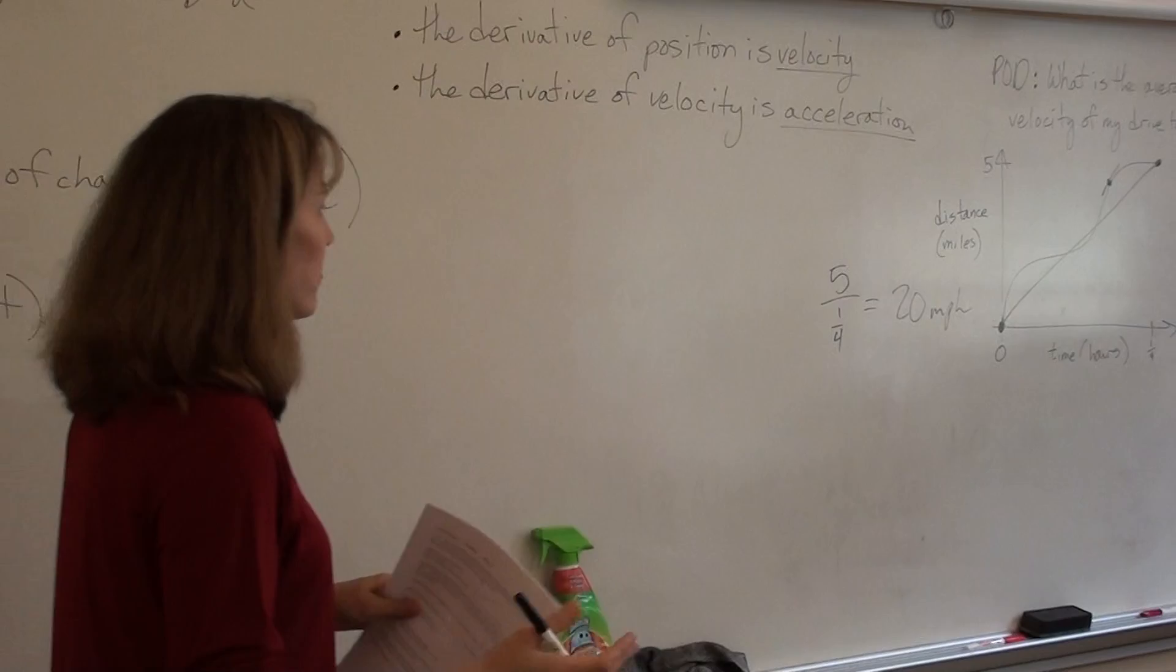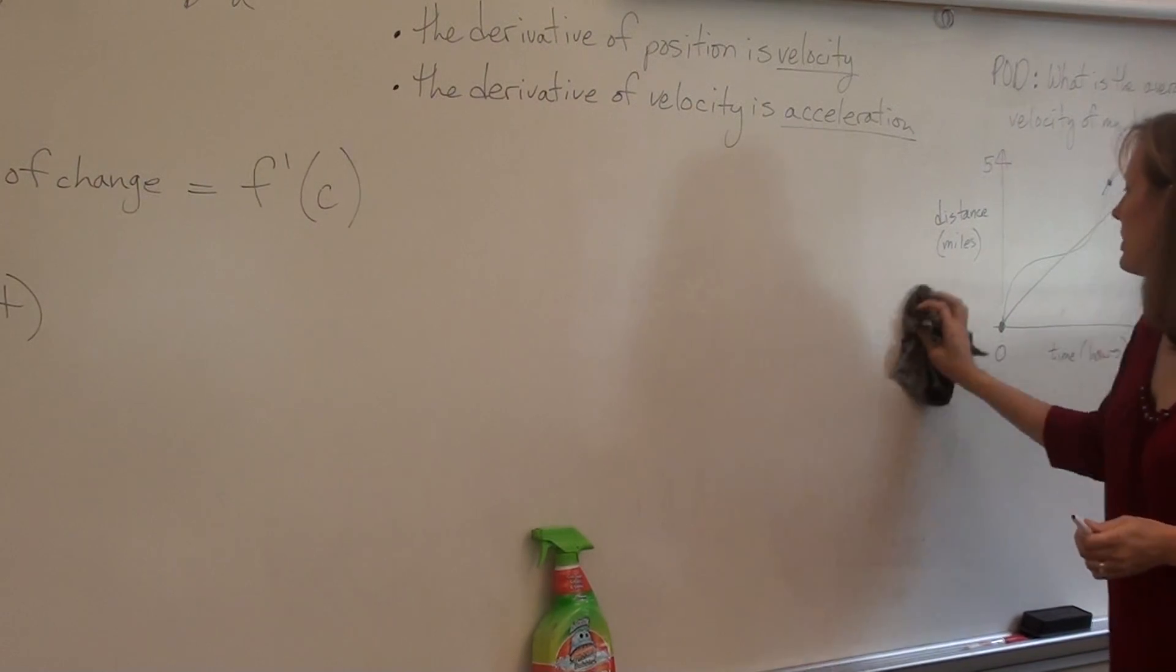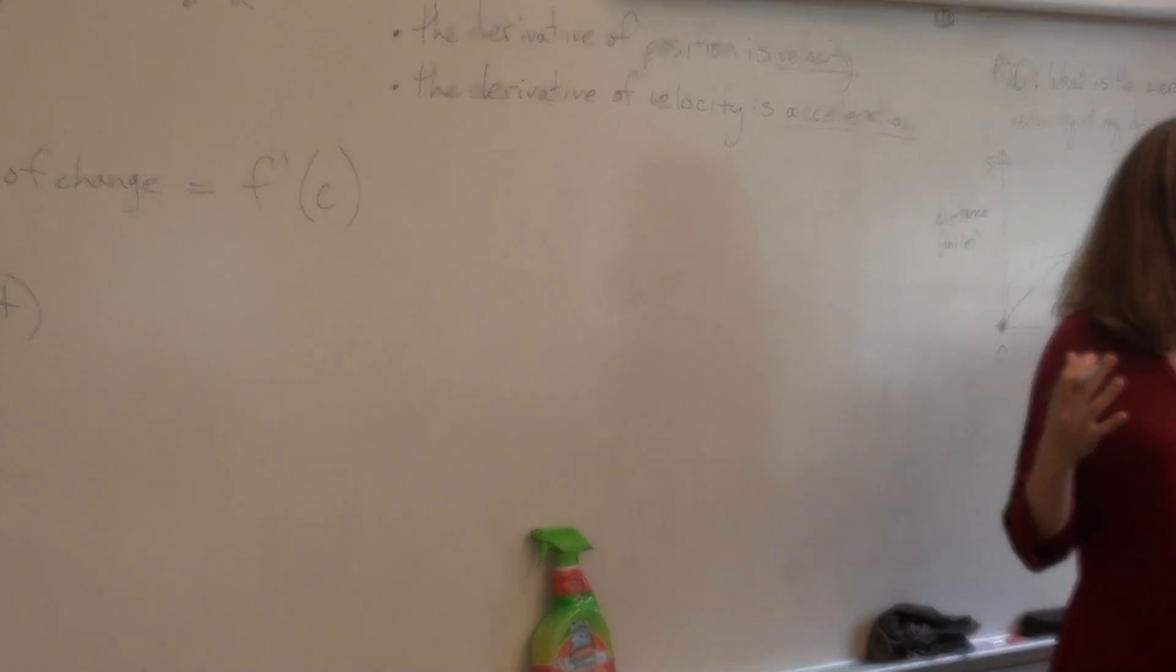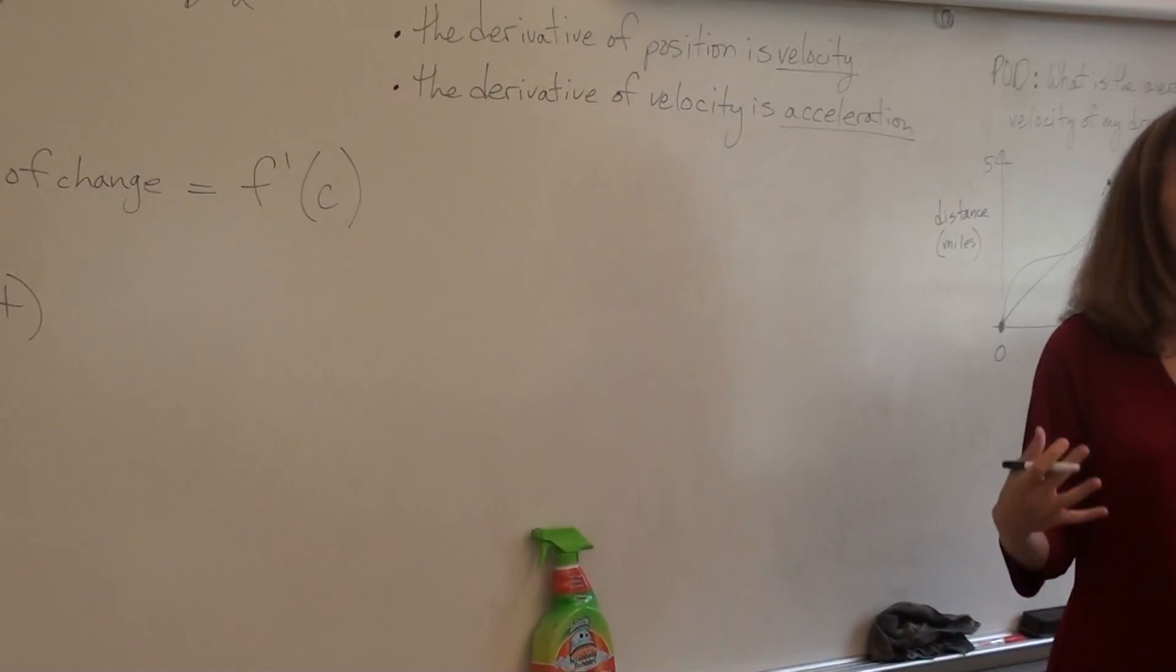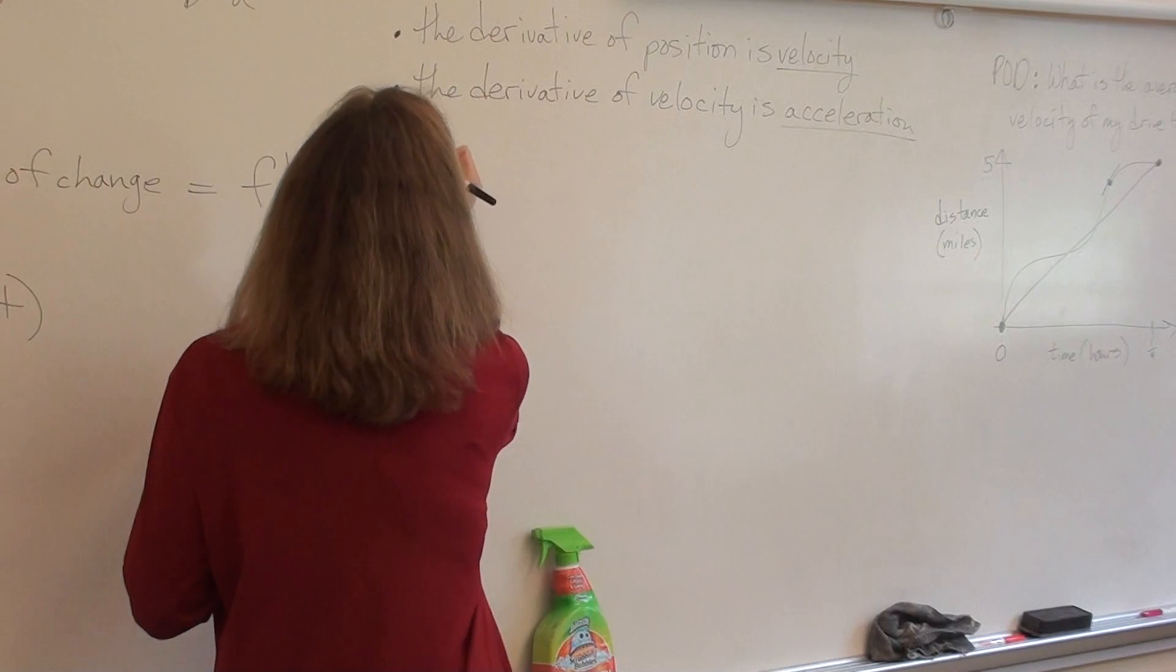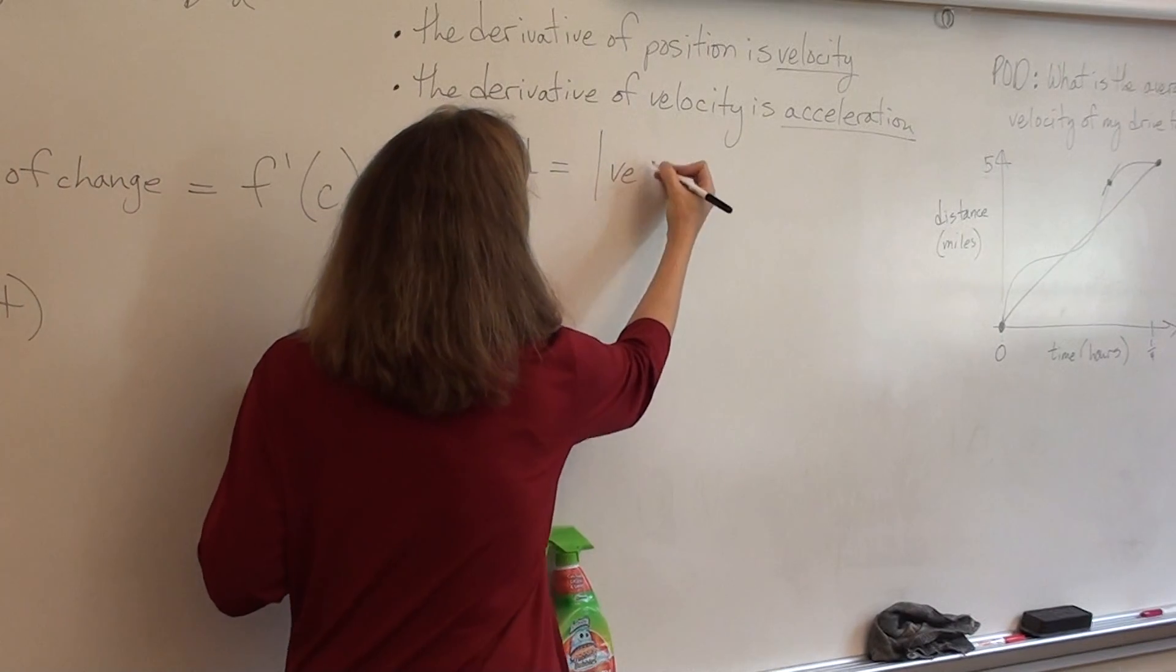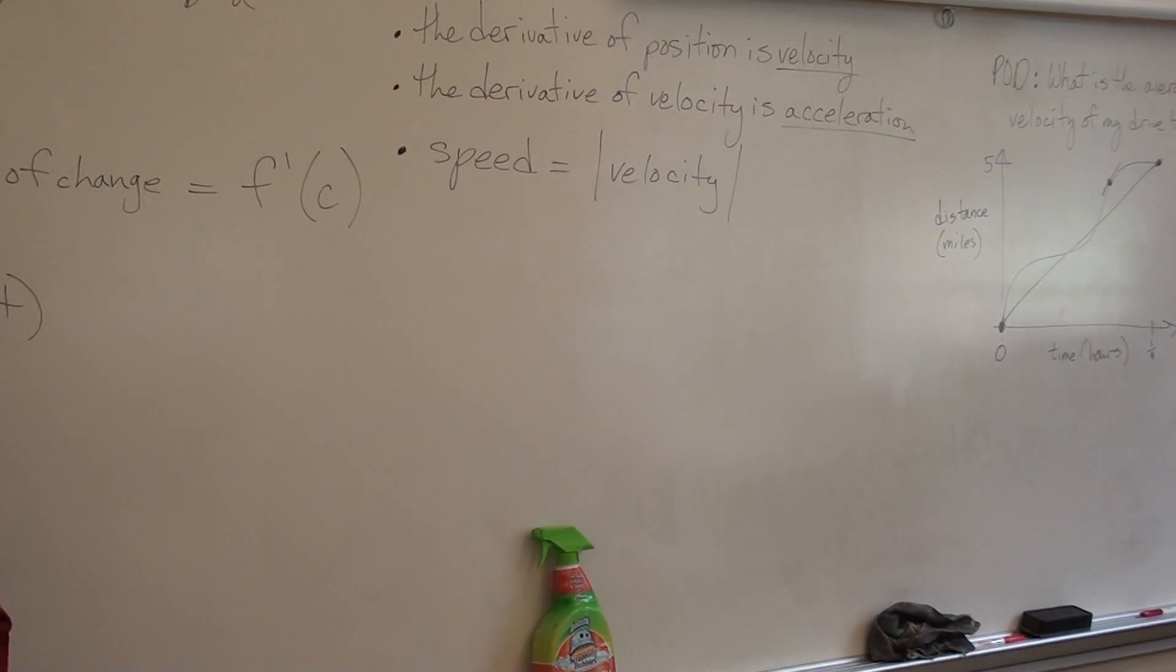Velocity is a vector. That means velocity represents both how fast you're going and what direction you're going in. It has a magnitude and it has a direction. Speed is a scalar. Speed is just how fast you're going. So the sign of velocity actually determines the direction. Velocity can be positive or negative. Speed is always positive. Speed is the absolute value of velocity.